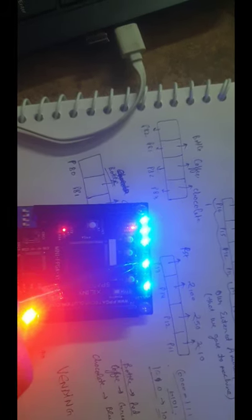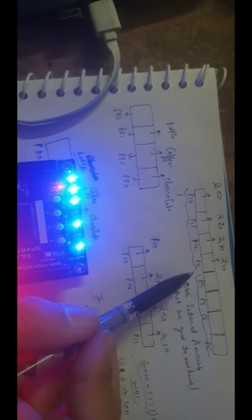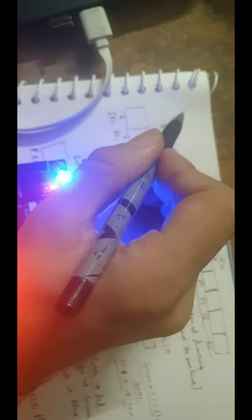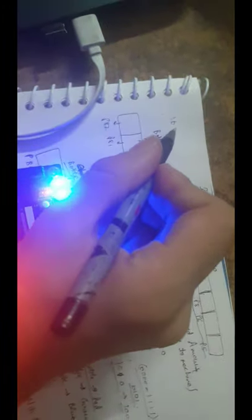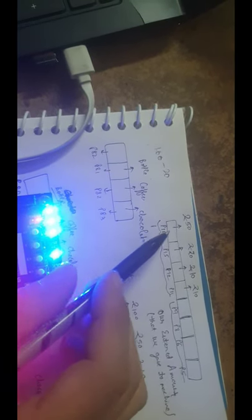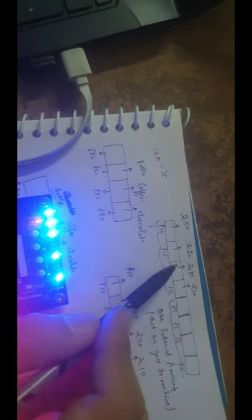After entering 100 rupees, I am going to get 1010 on the lower LSB LEDs, and I am going to get 80 rupees in return. These LEDs will give the output corresponding to the change generated by the machine. I gave the machine 100 rupees and the bottle costs 20 rupees, so 80 rupees will be returned to me.